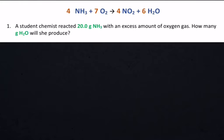Those coefficients in orange in front of each of the chemicals will be used to produce our molar ratios. Let's go ahead and read the question. It says, a student chemist reacted 20 grams of NH3 with an excess amount of oxygen gas. How many grams H2O will she produce?